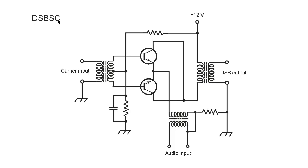Double sideband suppressed carrier. What we have here is a carrier input port, an audio input port, and the double sideband output port.